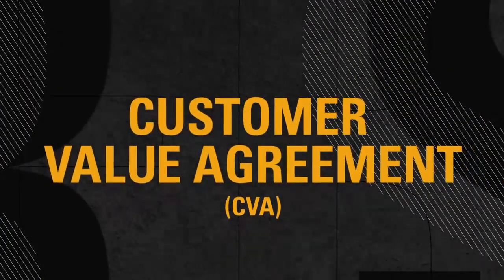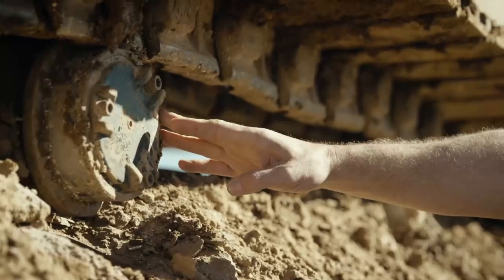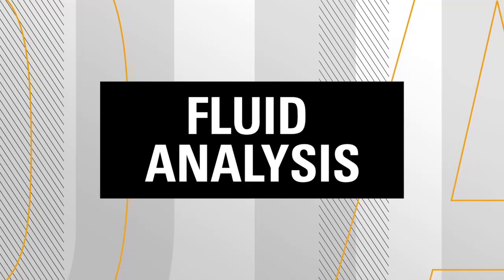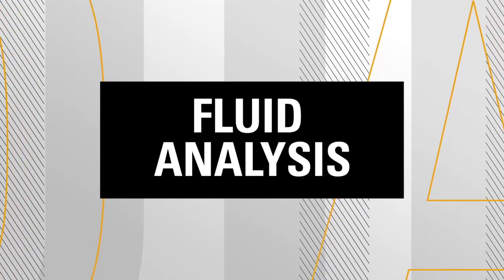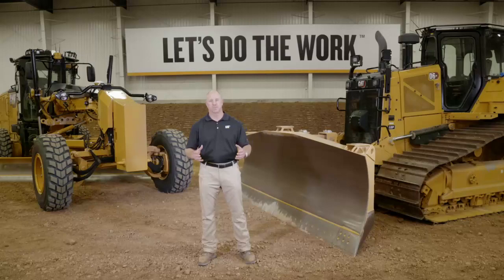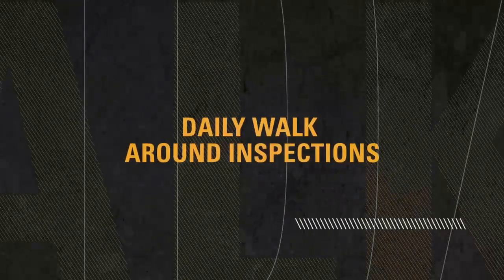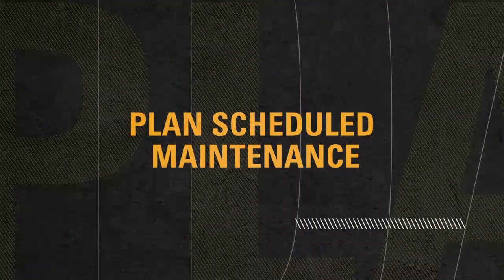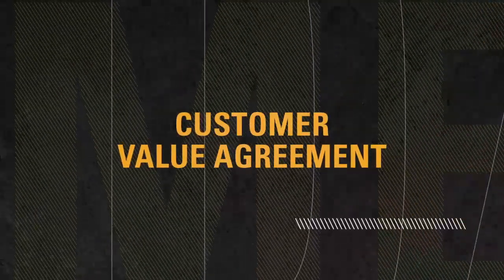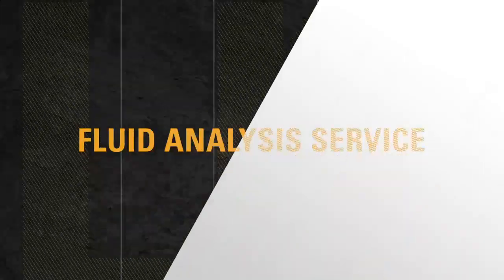Number four, for the do-it-for-me customers, consult with your dealer and set up a contract for the service and maintenance to be done for you. Number five, enroll in a fluid analysis service. This is the best way to see what's going on inside your machine and potentially prevent a catastrophic failure. So let's review: the five important parts of your preventive maintenance plan are — connect your fleet, perform daily walk-around inspections, plan for scheduled maintenance, enroll in a scheduled maintenance plan with your dealer for do-it-for-me customers, and enroll in a fluid analysis service.